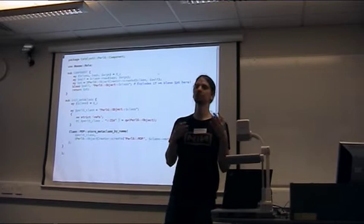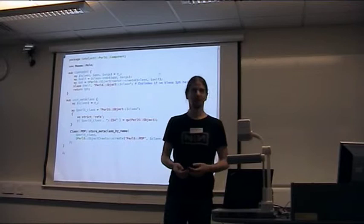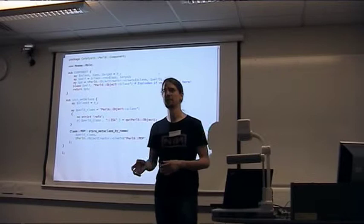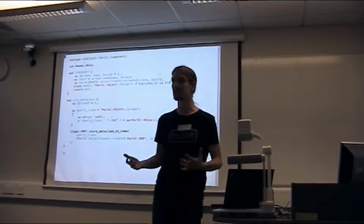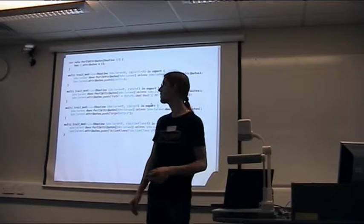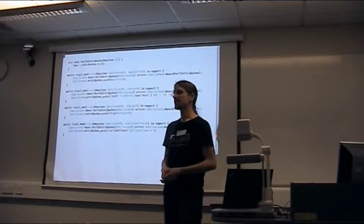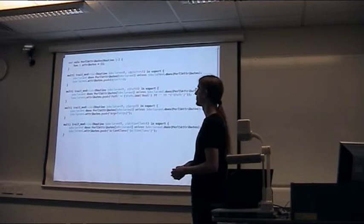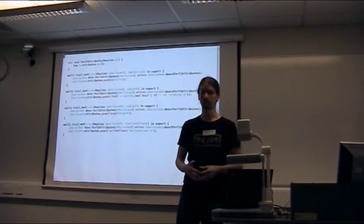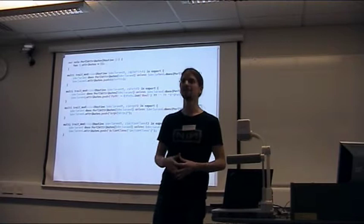But Catalyst still doesn't know how to map URLs to action methods because of the missing subroutine attributes. Perl 6 doesn't support attributes, but it has something better called traits. Traits in essence allow you to attach information to any kind of objects, including metaclasses and methods, because those are objects too in Perl 6. I wrote a couple of traits that attach attributes to an object and add a role — in this case the Perl5Attributes role — which stores this information for querying by the Perl6MOP. This is enough for Catalyst to find your action methods and know how to use them.